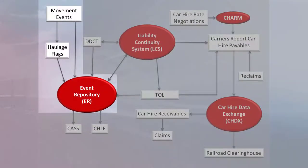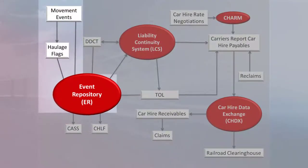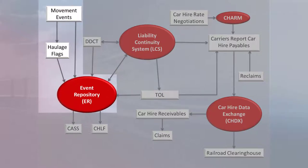Interchange reporting is part of the car movement process. Interchanges are stored in the event repository, or ER. This process on the left side of the data flow was introduced in the overview video that is part of the car hire training series. This is where car movements are reported. Interchange and event reporting starts the process of determining car hire liability and drives everything else pertaining to car hire. It is important for railroads to strive for timely and accurate reporting. Carriers report interchanges and car movement events to Rail Link through the train reporting system.